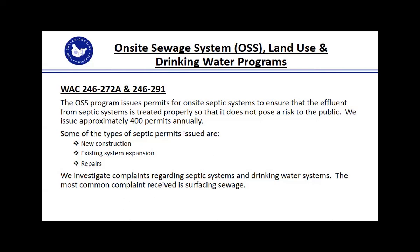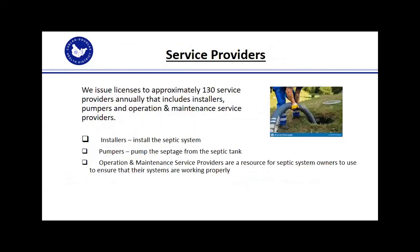The major types of septic permits we issue are new construction, existing system expansion, and repairs. As with all five programs, we investigate any complaints — the most common in the on-site program is surfacing sewage. We also license service providers; we have about 130 of those, required under WAC to have an annual license. Our three categories are installers, who install the septic systems; pumpers, who pump the septage from the septic tanks; and operation and maintenance service providers, who can troubleshoot a septic system and help guide owners to get their system fixed.